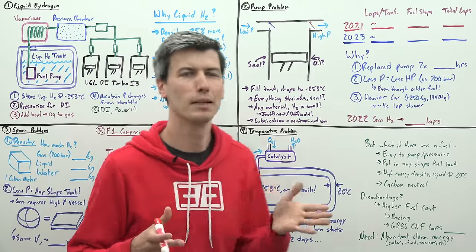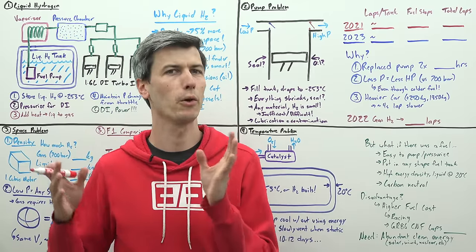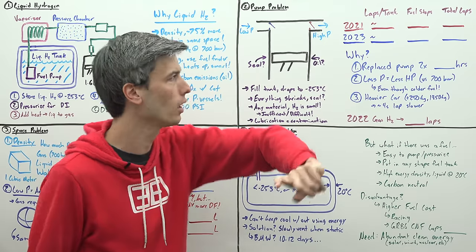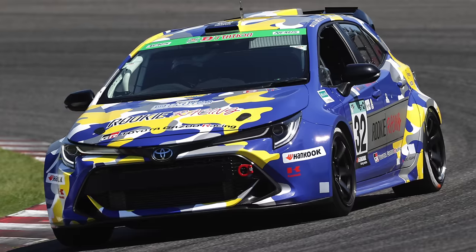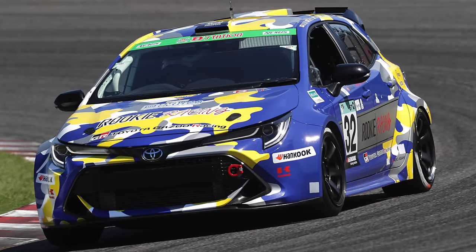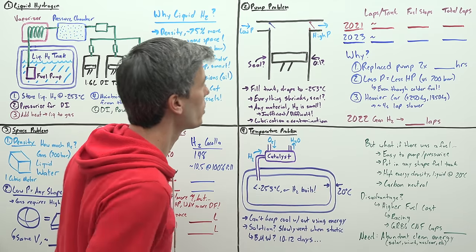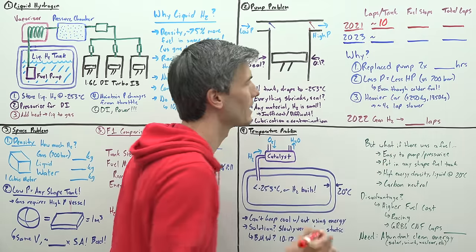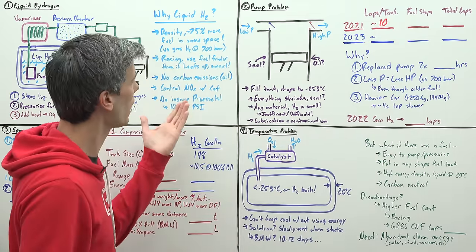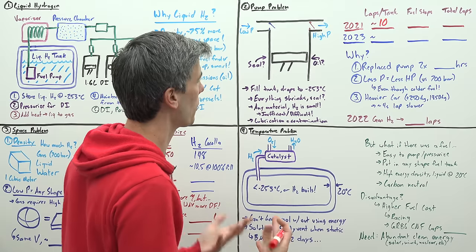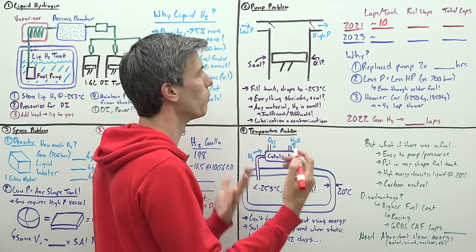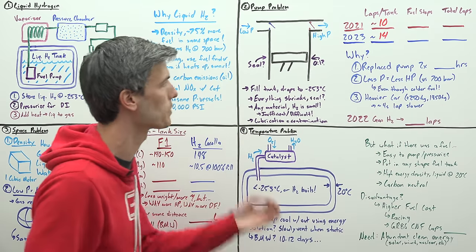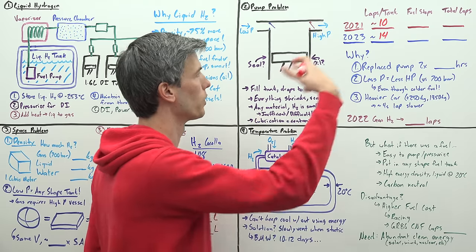To better understand this problem, let's compare the GR Corolla powered by gaseous hydrogen in 2021 versus the GR Corolla in 2023 and its results in the 24-hour Fuji race. In 2021 using gaseous hydrogen it completed about 10 laps per tank. Liquid hydrogen means you have more hydrogen in the same space, so they were able to carry more hydrogen on board, allowing them to travel about 14 laps per tank before refueling.